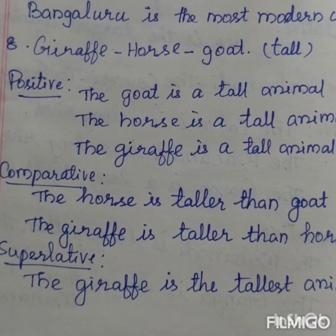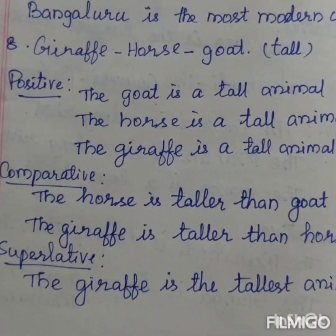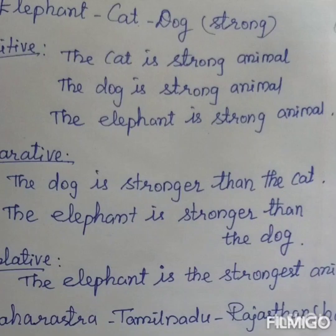Next: giraffe, horse, goat — adjective is 'tall'. For positive degree: the goat is a tall animal, the horse is a tall animal, or the giraffe is a tall animal. For comparative degree: the horse is taller than the goat; the giraffe is taller than the horse. For superlative degree: the giraffe is the tallest animal.